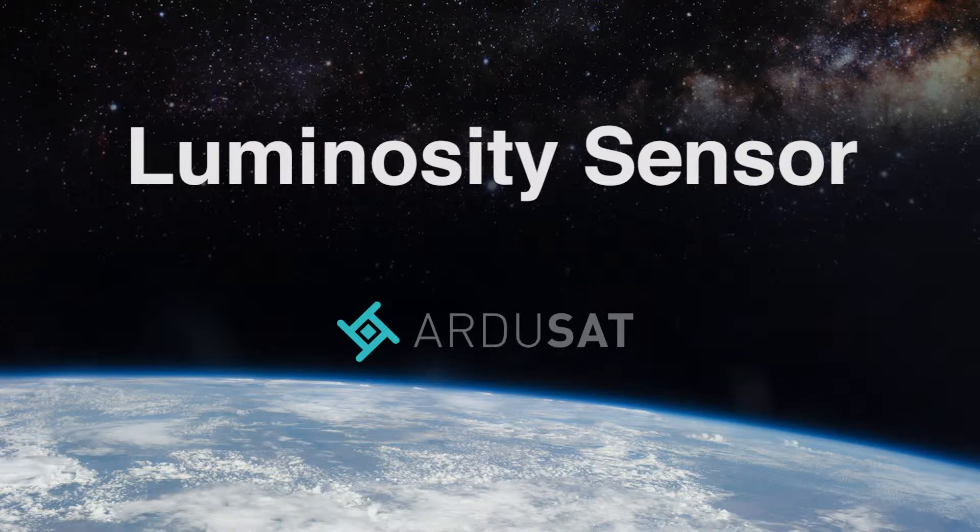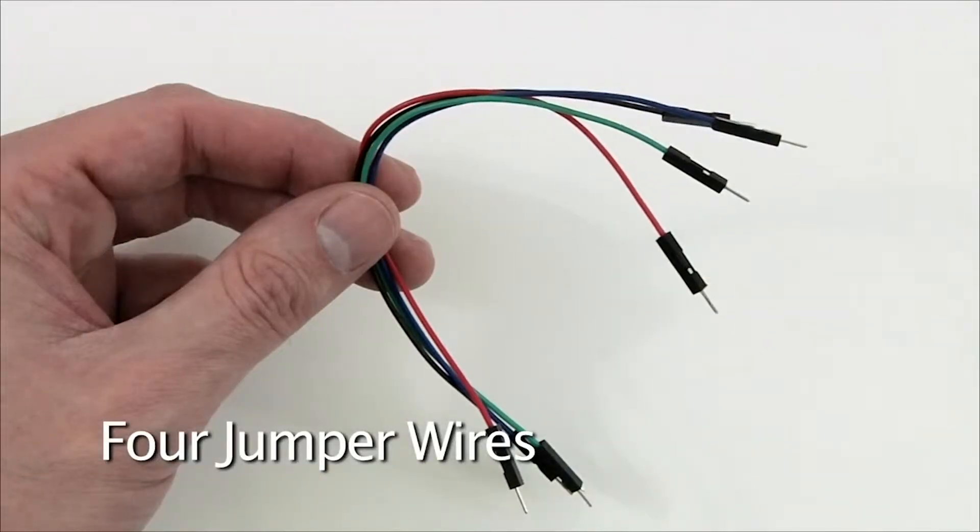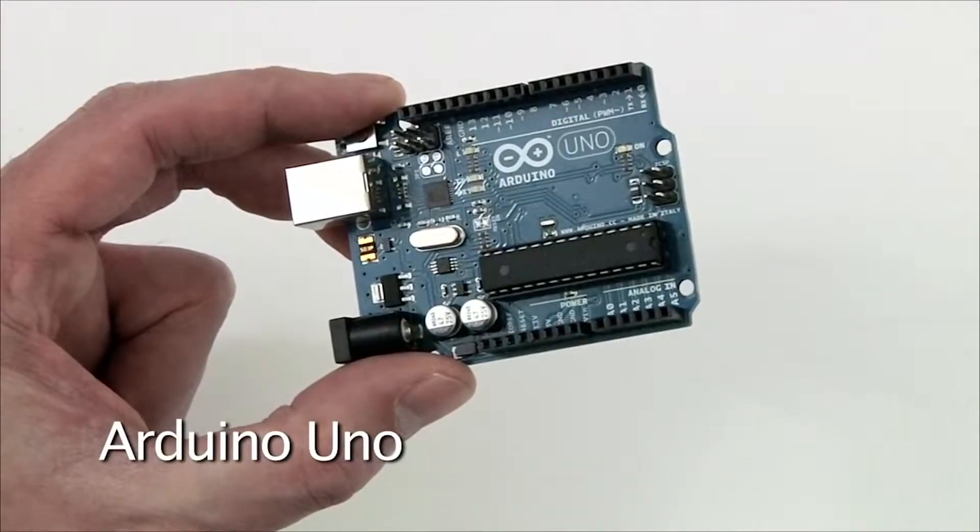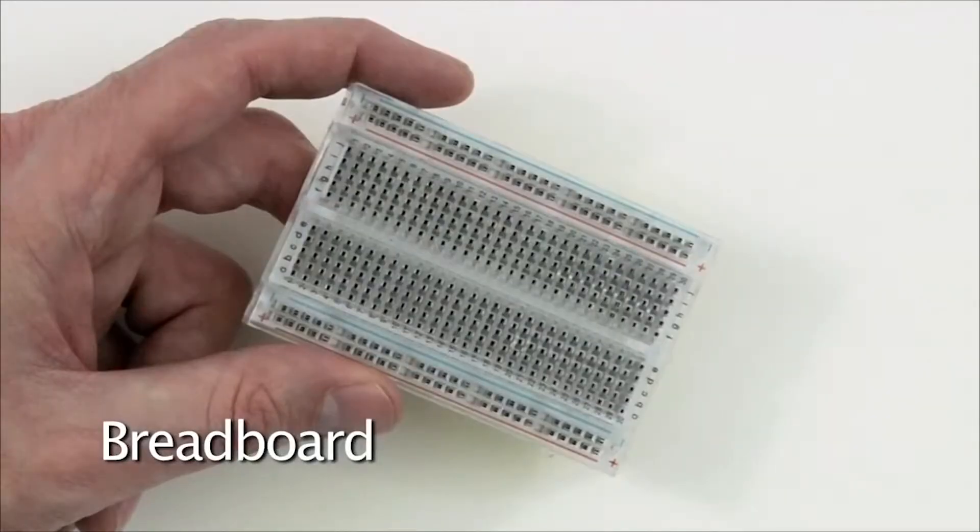You'll need four jumper wires, the Arduino Uno, the luminosity sensor, and the breadboard.